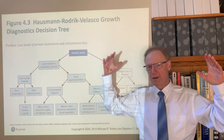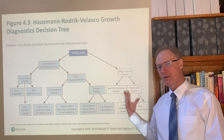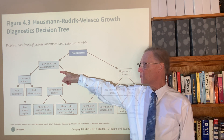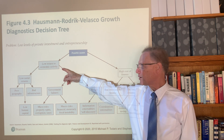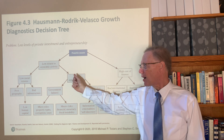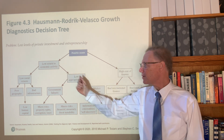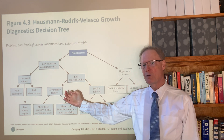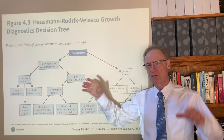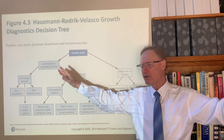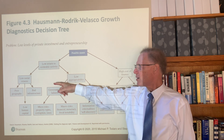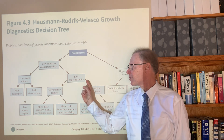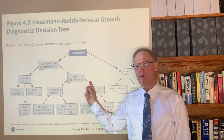On the other side of the economy, the problem could also be low direct return with respect to different economic activities. The authors divide this into two general areas as the tree branches out further: one is that there are inherently low social returns, and the other is low appropriability.